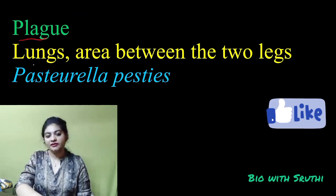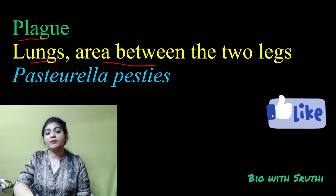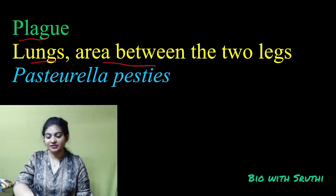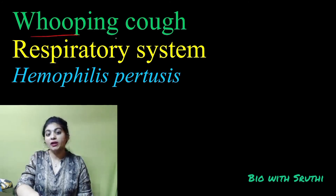Plague affects the lungs as well as the area between the two legs. The causative agent is Pasteurella pestis.